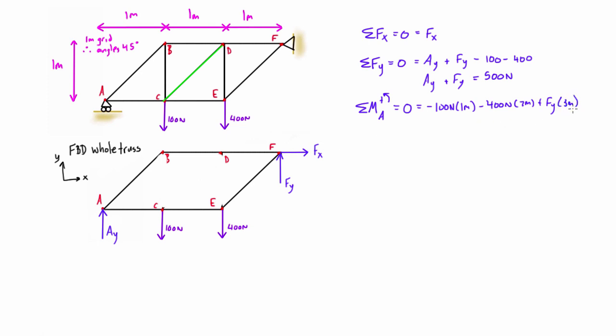We don't need to add Fx to this expression because we already know Fx is zero. Let's simplify: negative 100 minus 800 equals negative 900, plus 3Fy equals zero. Rearranging for Fy, we get 900 over 3, which equals 300 newtons. That's positive, so it's in the upward direction as we drew it.